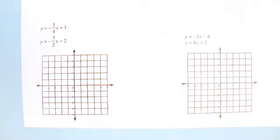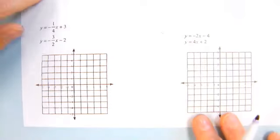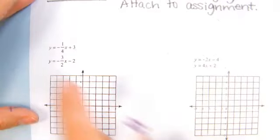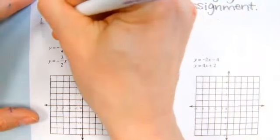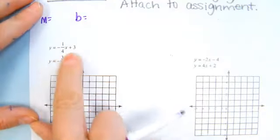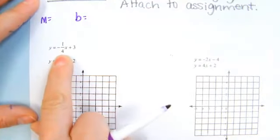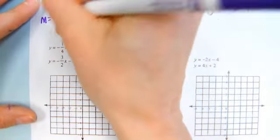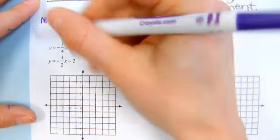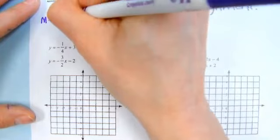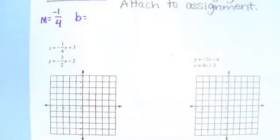What we want to do is find our slope and our y-intercept for each. I'm going to do some of the work up above since there's not a lot of space. For this first equation, remember the slope is what is next to x. So my slope here is negative one-fourth. We're going to take that negative and for now we're always just going to put it with our top number.